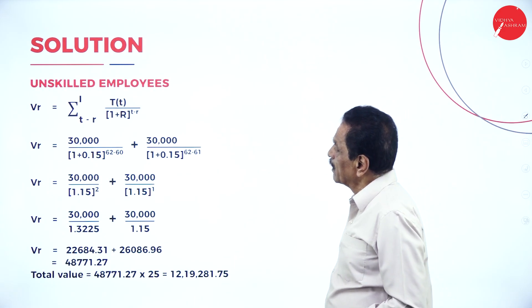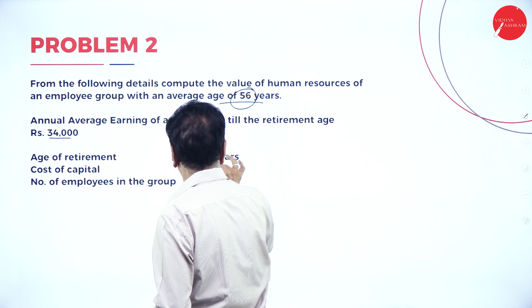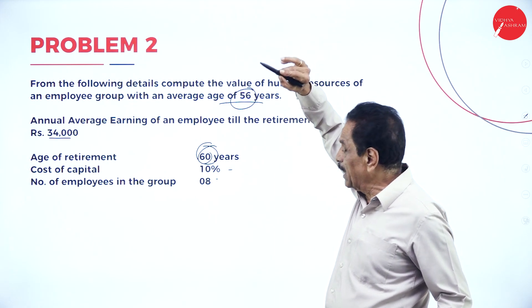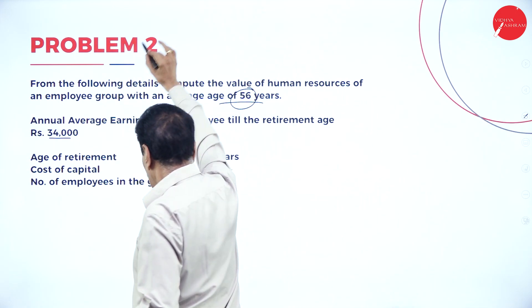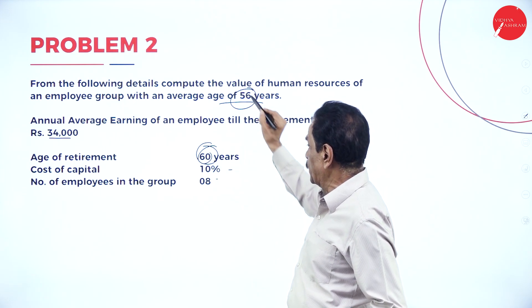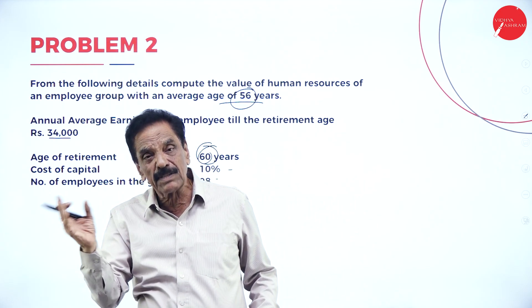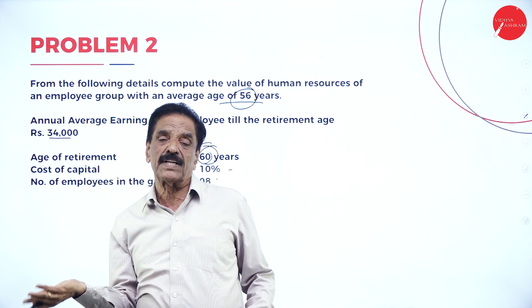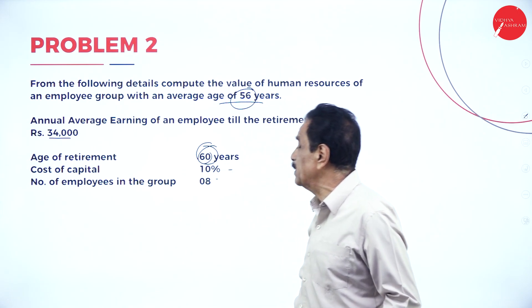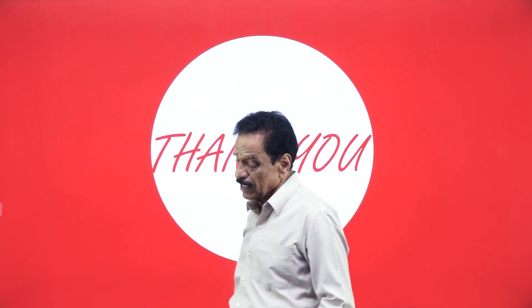Hope you understand. This is very important. For example, if the average is 50 and salary is 34,000 with discount rate 10%: 34,000 divided by (1 + 0.10) to the powers of (60 minus 56), (60 minus 57), (60 minus 58), (60 minus 59) — since 60 years is the retirement age. The number of employees (8) is then multiplied at the end.